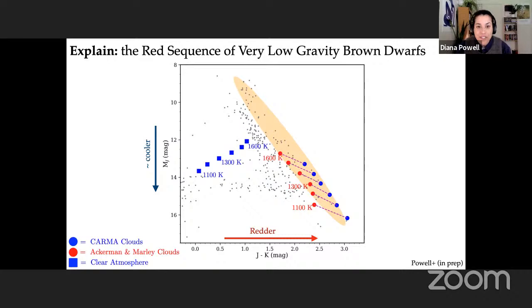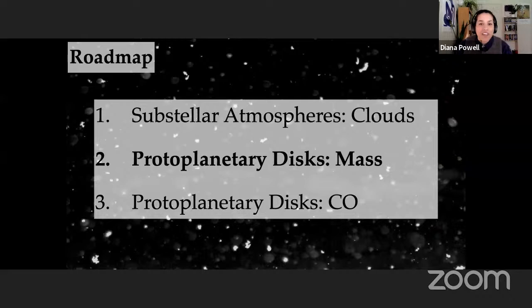I've discussed the importance of understanding clouds and substellar atmospheres, which is important in constraining evolved planets. Now I'm about to turn our attention to protoplanetary discs — the locations of planet formation — starting with the interesting question of how much total mass is present in the system. If there are any questions on clouds, now would be a good time.